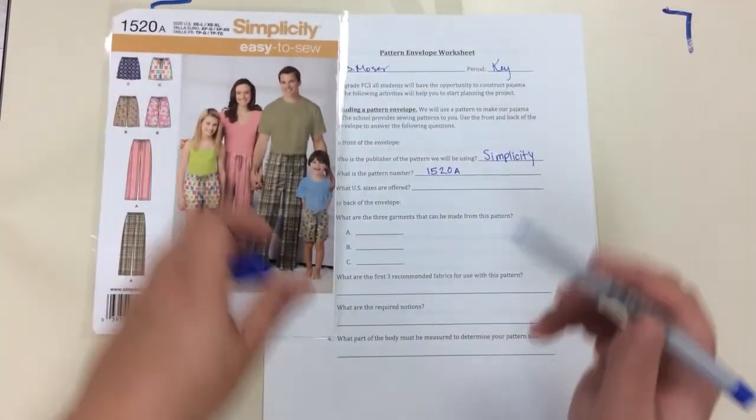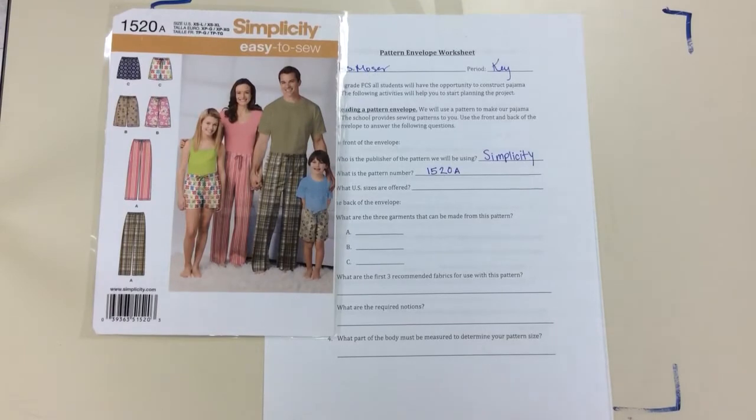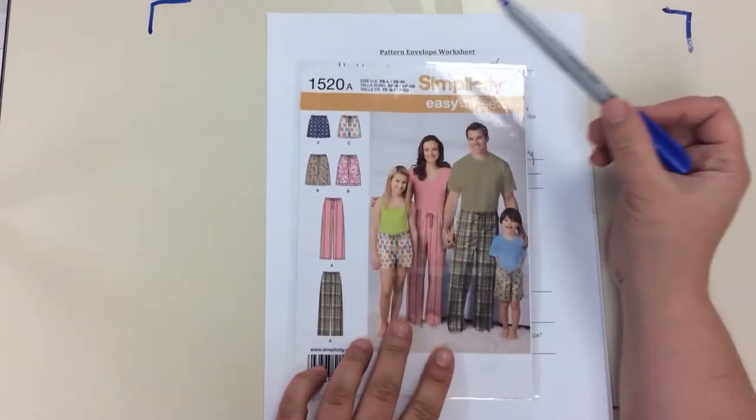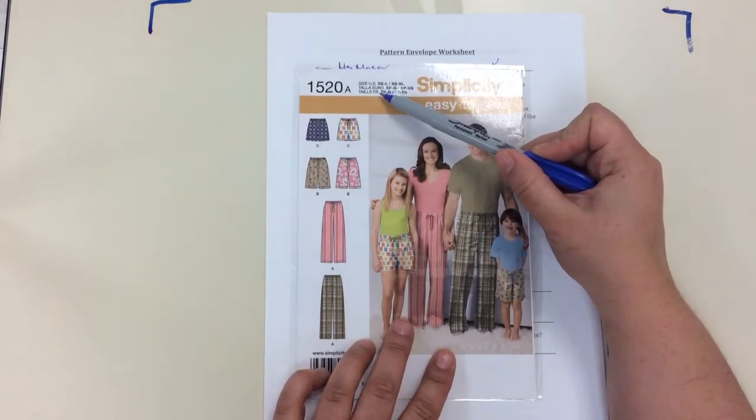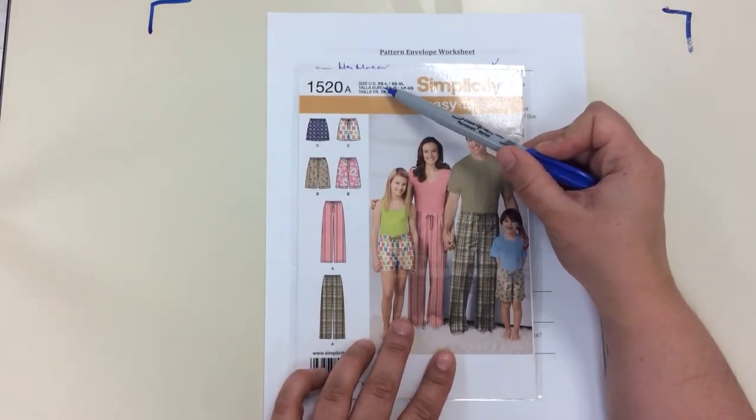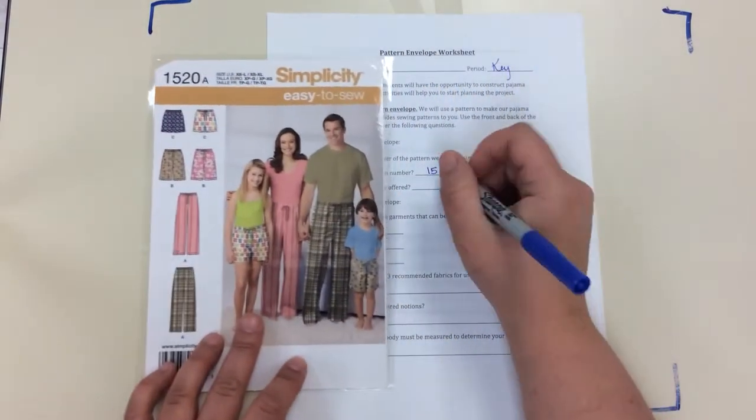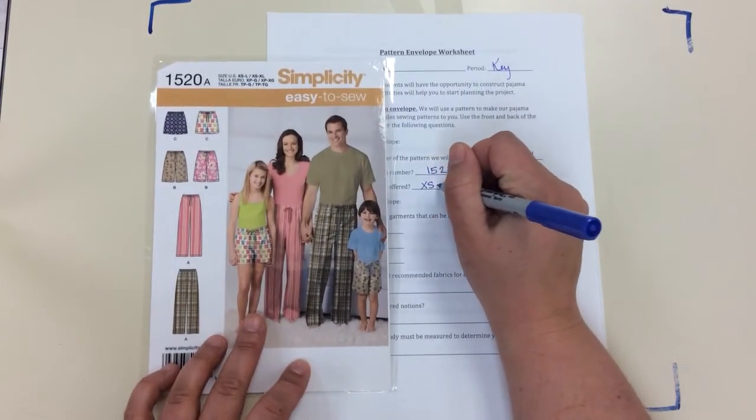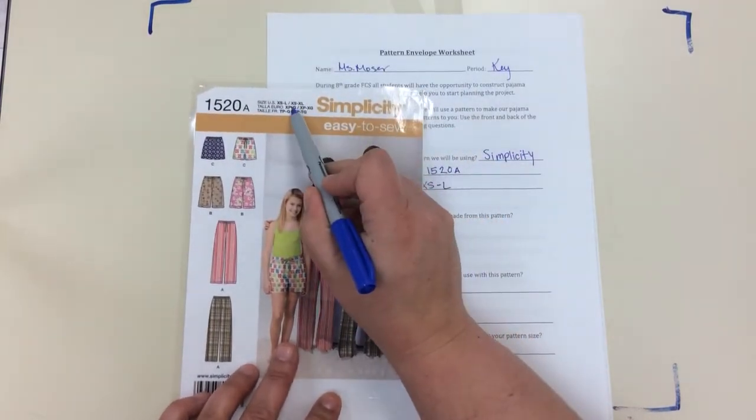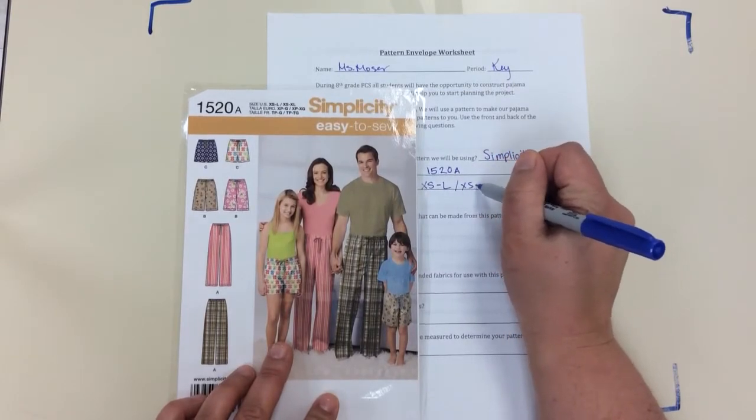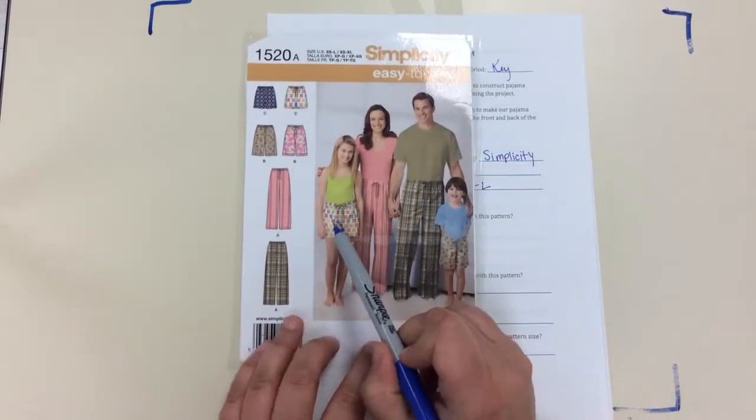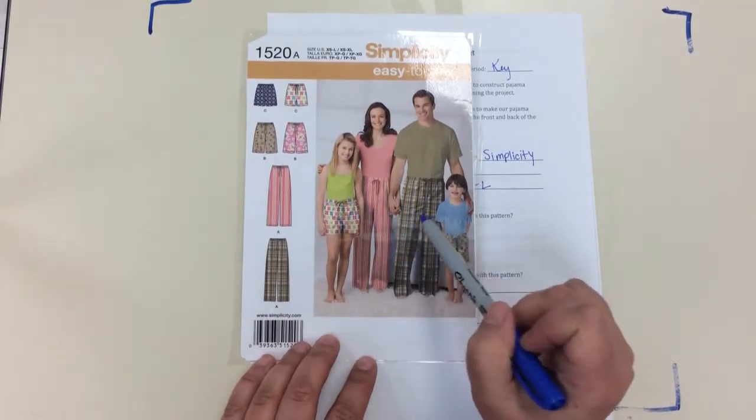The second question is asking about the sizes. You can see there are some sizes for the US, also Europe and France. In the US it makes extra small to large, and it lists it twice. That's because it makes extra small to large in children's and kids, as well as extra small to large in adult sizes.